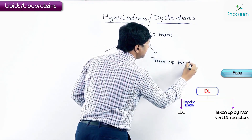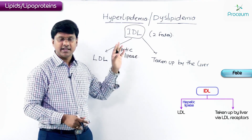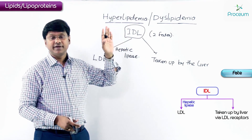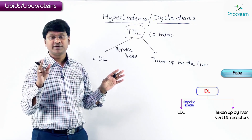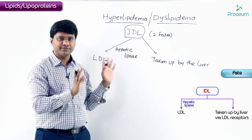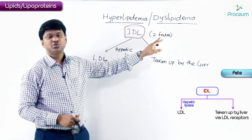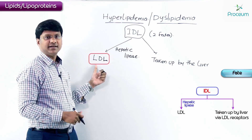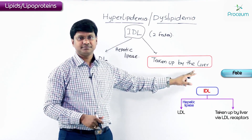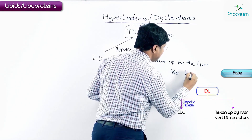The intermediate density lipoprotein is the lipoprotein being formed from VLDL (very low density lipoprotein). VLDL carries triglycerides which are endogenously synthesized in the liver to various parts of the body. From VLDL we get IDL, which has two fates: it is either converted into LDL in the presence of hepatic lipase, or it is taken up by the liver via LDL receptors.